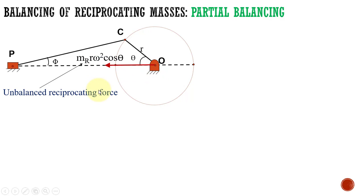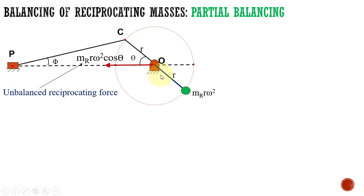In order to balance this unbalanced reciprocating force, we are going to add a rotating mass along the direction of the crank in the opposite direction. So in order to balance this force, we are going to add a balancing mass along the direction of the existing crank in the opposite direction. This is the balancing mass.